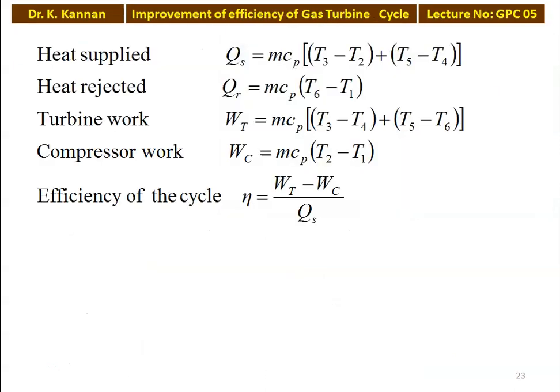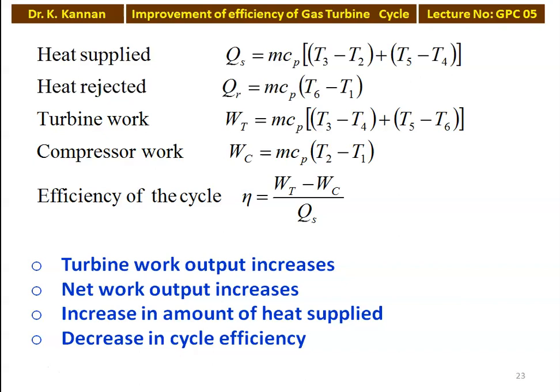Heat supplied equals mCp[(T3 − T2) + (T5 − T4)] for two stages of heat addition (heat exchanger and reheater). Heat rejected equals mCp(T6 − T1). Turbine work equals mCp[(T3 − T4) + (T5 − T6)], and compressor work equals mCp(T2 − T1). Efficiency is calculated as eta = (WT − WC) divided by heat supplied. The effect of reheating: turbine work output increases and net work output also increases. However, more heat is supplied, so there will be a slight decrease in cycle efficiency. The main purpose of reheating is to increase turbine work and net work output of the cycle.